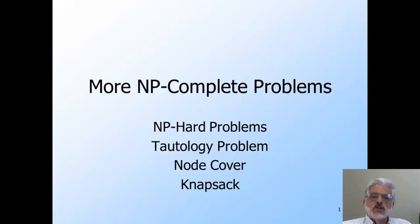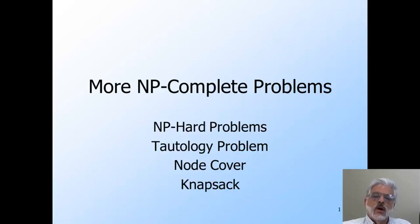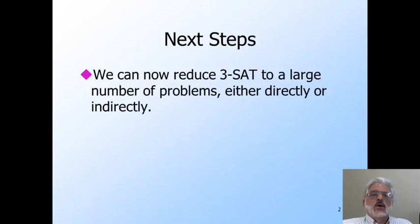Before moving on to reductions that show the problems node cover and knapsack to be NP-complete, we introduce one more nuance into the theory. NP-hard problems are those that would be NP-complete if only they were in NP, but that are probably or certainly harder than anything in NP. We talk about the tautology problem, which is an example of such a problem, even though it is very closely related to SAT. We are ready to reduce 3SAT to a number of other problems, thus showing each of them NP-complete.